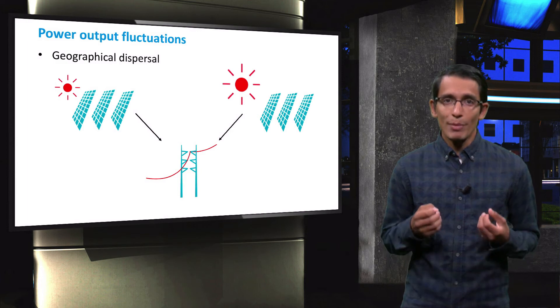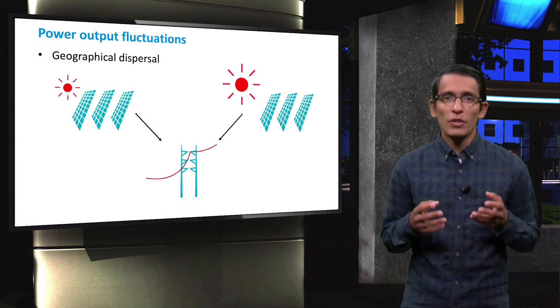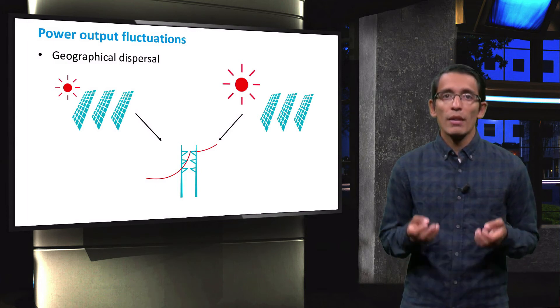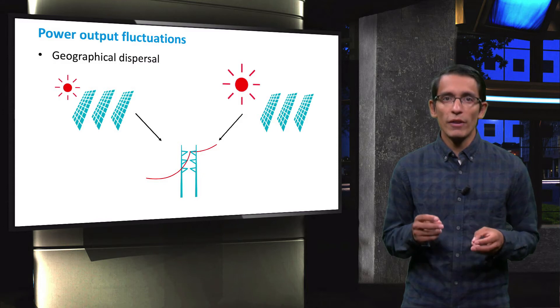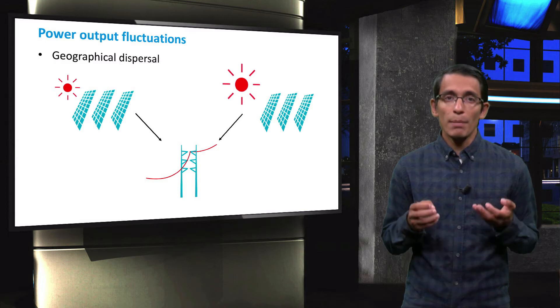In order to minimize the impact of power fluctuations, some different strategies can be adopted. For example, by means of geographical dispersal, it is possible to have simultaneously two or more PV farms that receive different solar irradiance or that are subject to slightly different weather conditions that can affect power production.